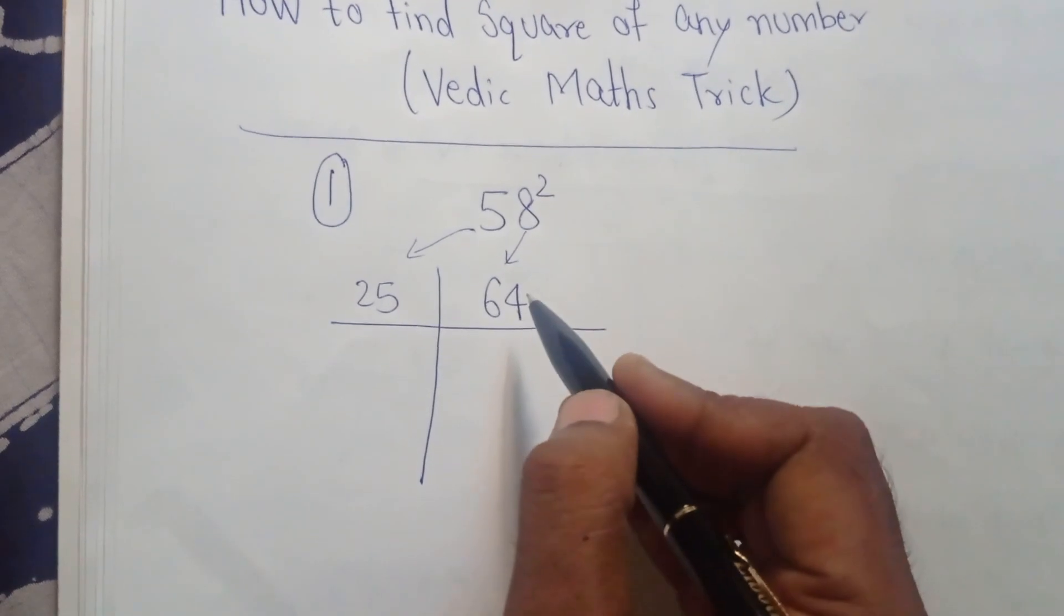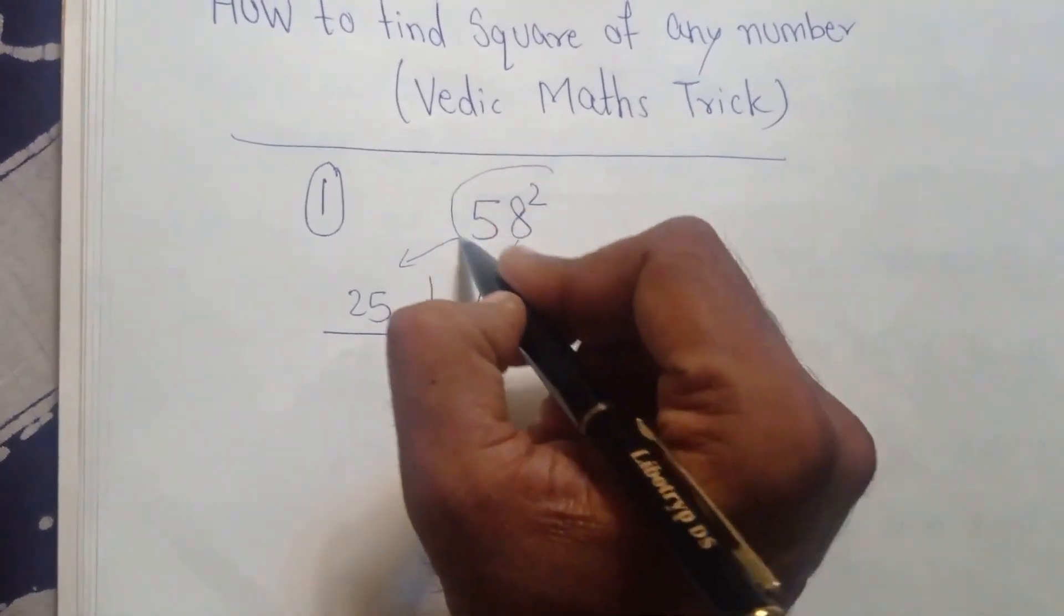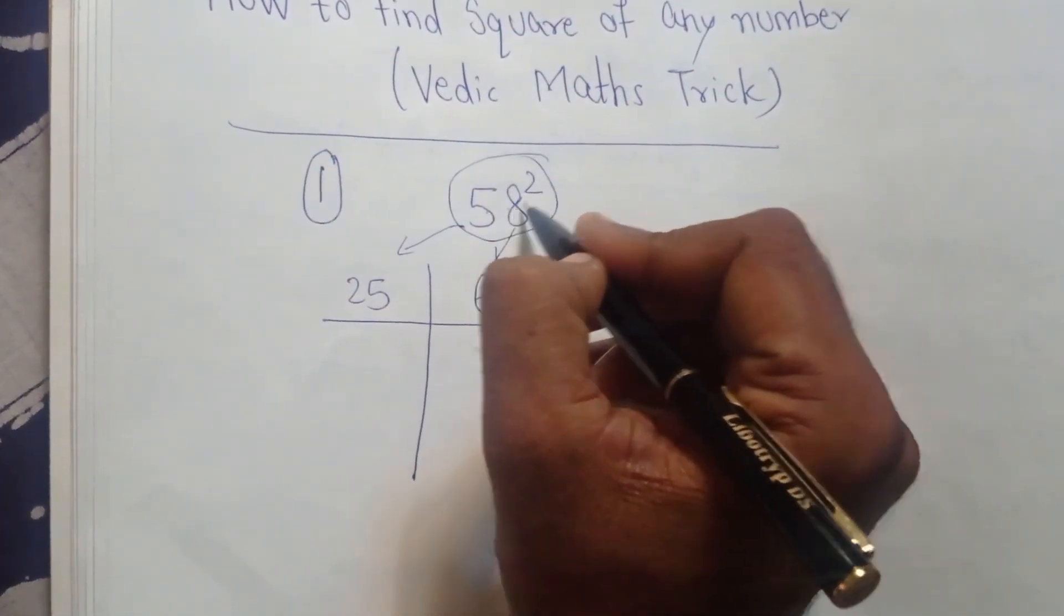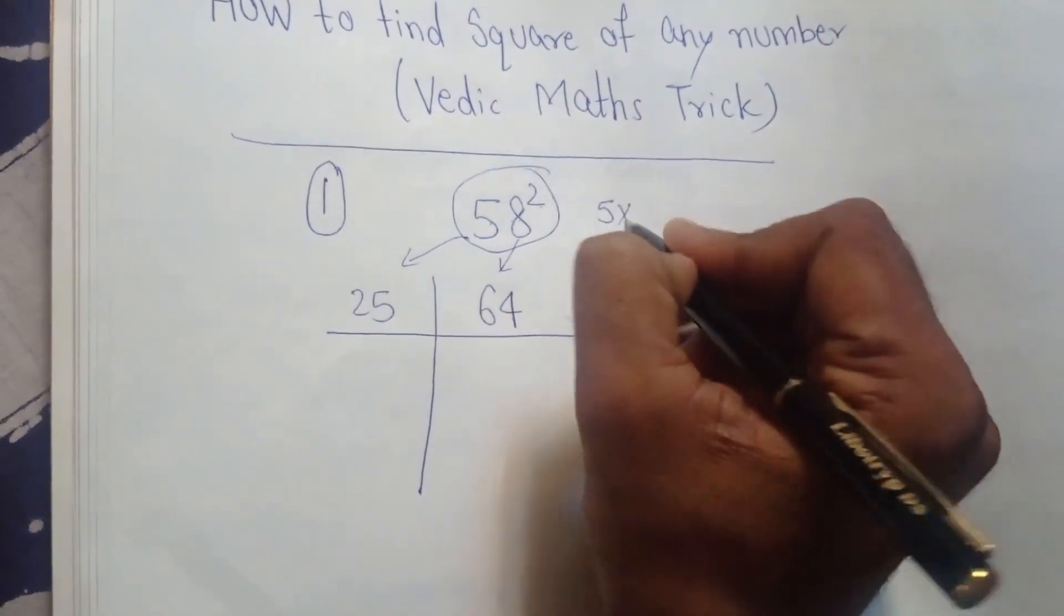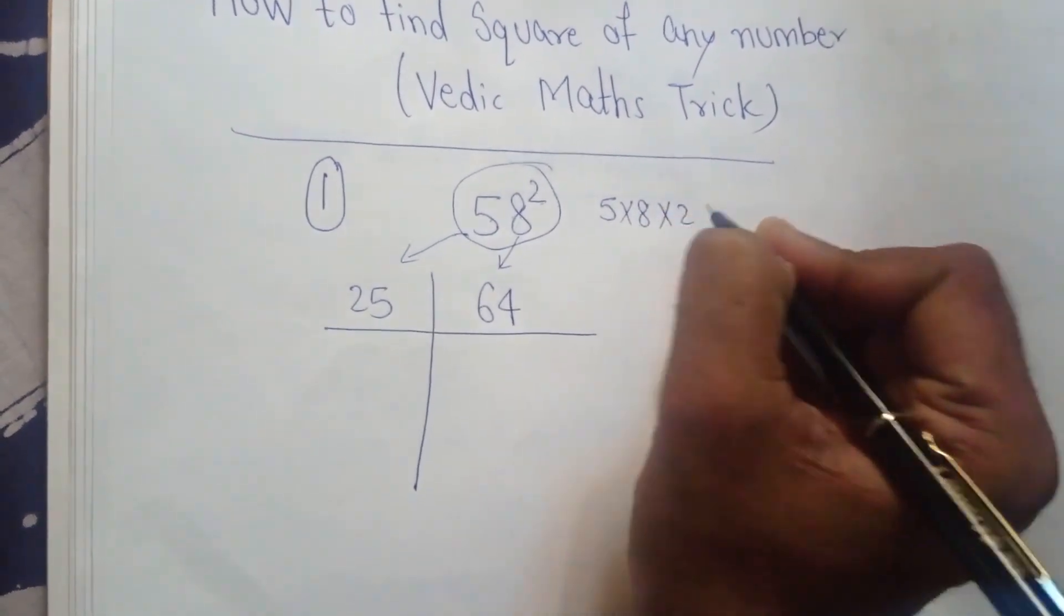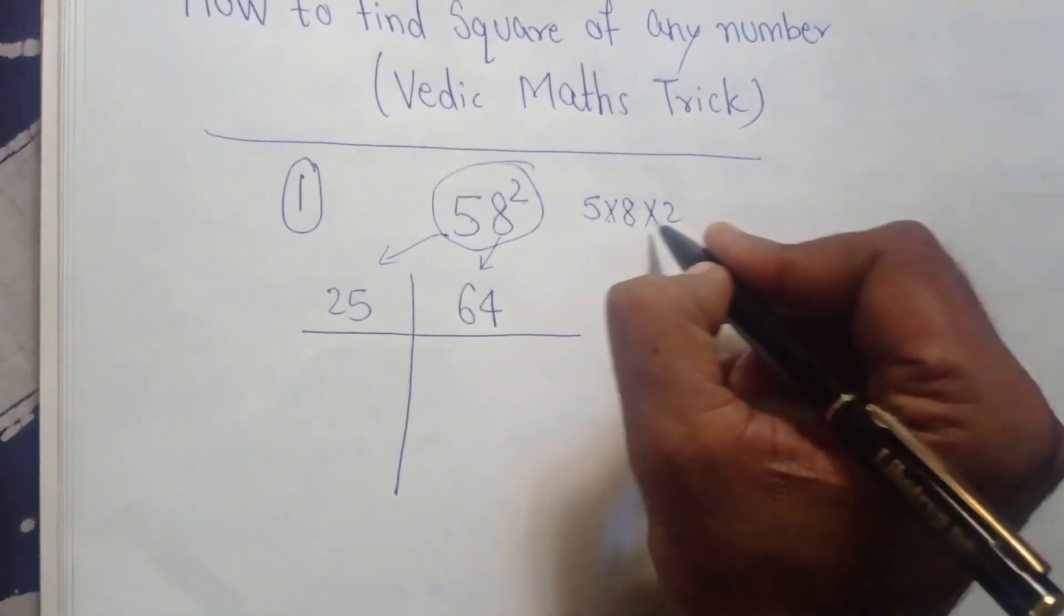Now we have to multiply 5 by 8 and by 2: 5 into 8 into 2. 5 times 8 is 40, times 2 is 80.